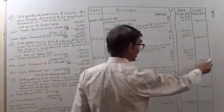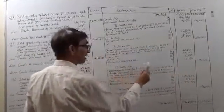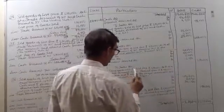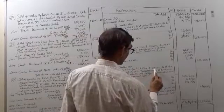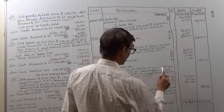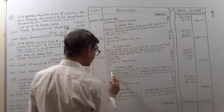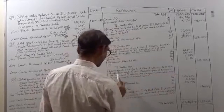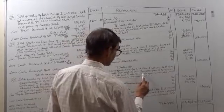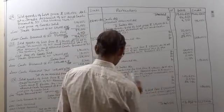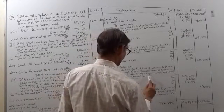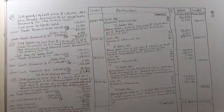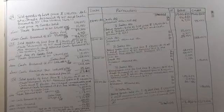The goods going out of the firm were of rupees 1,17,000, so sales account will be credited 1,17,000. Narration: goods sold of list price rupees 1,30,000 to N at a trade discount of 10%, received from N rupees 40,000 in cash and rupees 60,000 by cheque immediately, and allowed cash discount at the rate 5%.